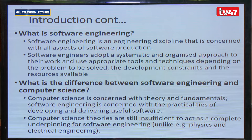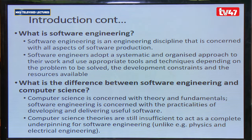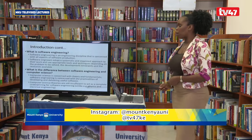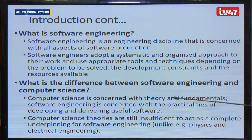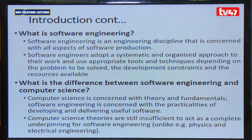Computer science and software engineering are easily confused, but there is a clear distinction. Computer science is concerned with theory and fundamental concepts, while software engineering is concerned with the practicalities of delivering and developing useful software. We use the theories and fundamental concepts that computer science provides to do software engineering.